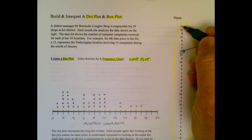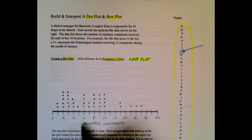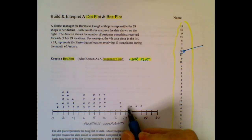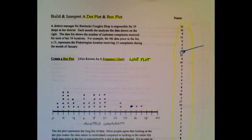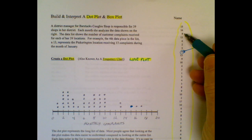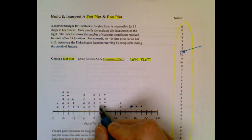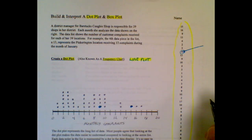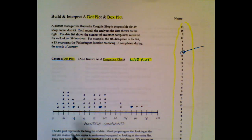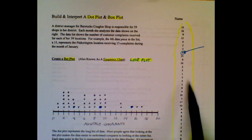So the location that had 15 complaints, their monthly complaints, that's this dot right there. This location had nine complaints, that's this dot right there. This location had four complaints, that's this dot right there. And if you take all that data and put it into dots, now you have a good visual representation.